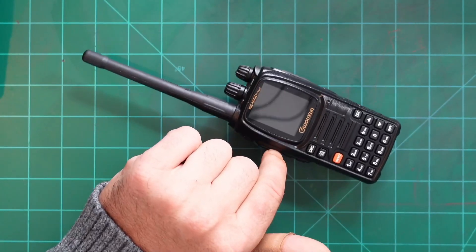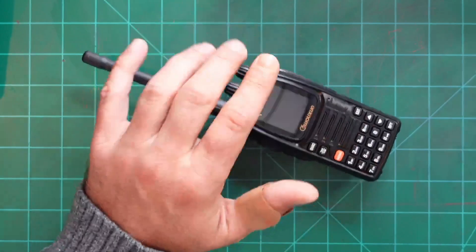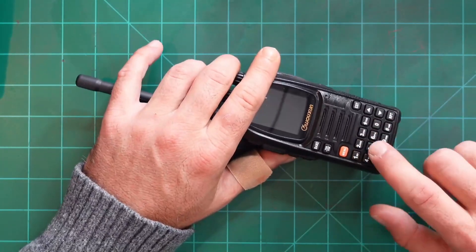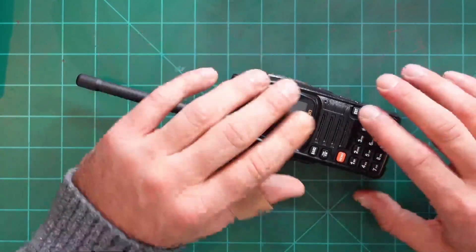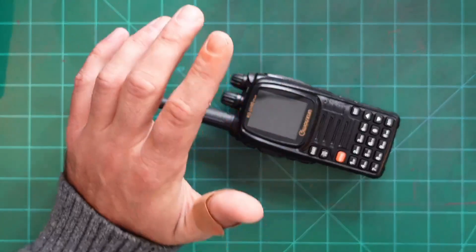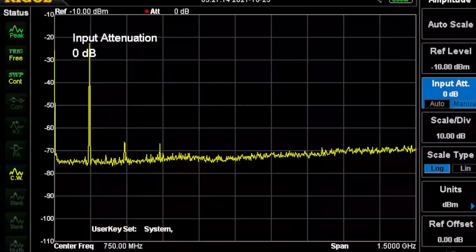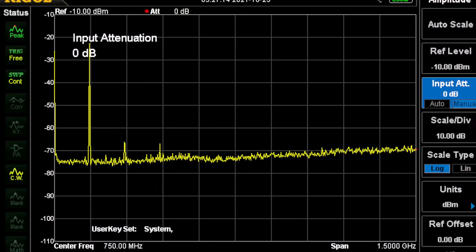The radio is Part 97 certified. And if that means anything to me, it should mean that it'll meet the standards for Part 97 and the spurious emissions in particular. So I did run a spectrum analyzer on it. And I inputted that one watt and I used an attenuator, which brought me down to around negative 22 dBm.